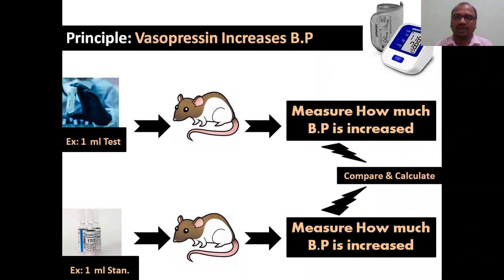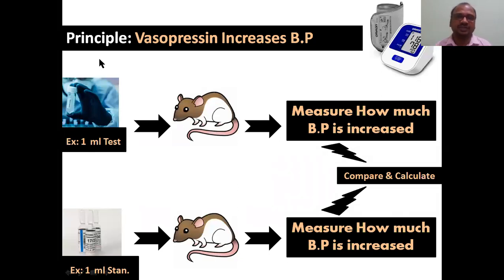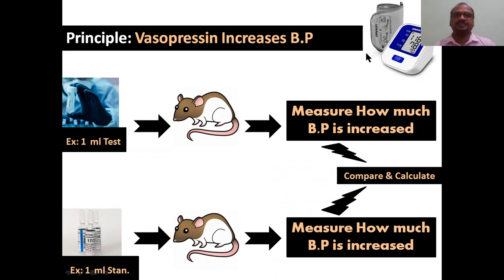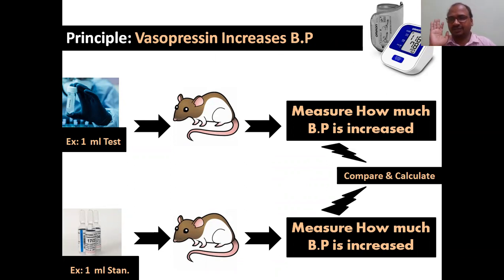The main principle: the main activity we are going to measure is the increase in BP. Vasopressin increases the BP — this principle part is very important in all examinations, and that point you have to write.